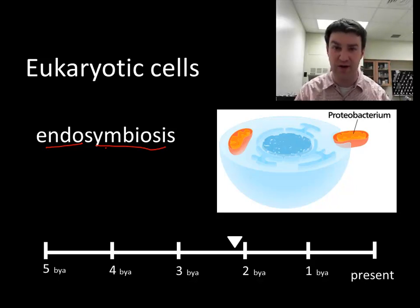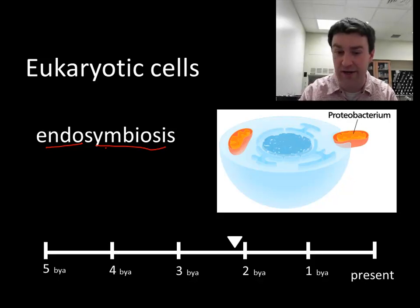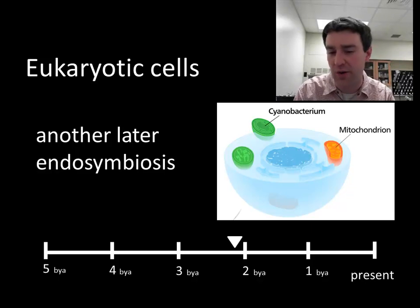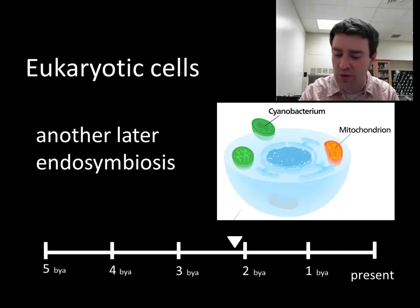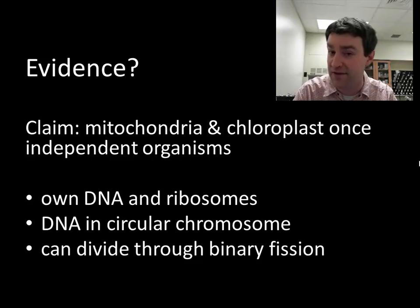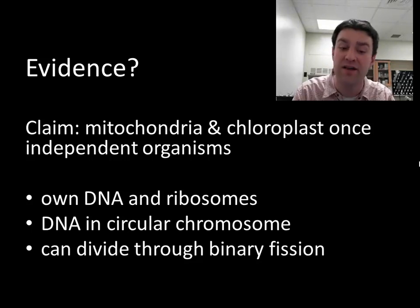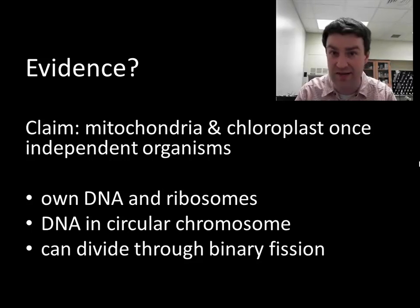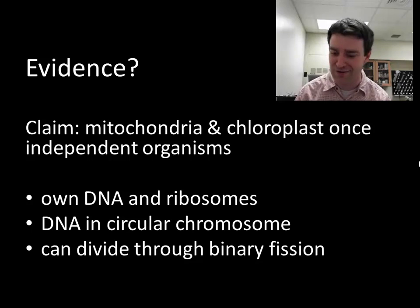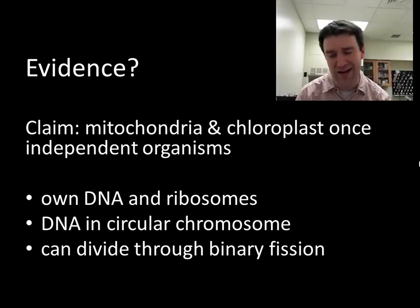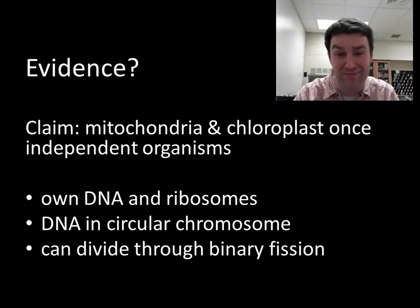We think this endosymbiosis may have occurred multiple times, because all eukaryotes now have mitochondria. And future autotrophic eukaryotes may have also acquired photosynthetic bacteria through another internal symbiosis. Why do we think this for mitochondria and chloroplasts specifically? Because they have their own DNA and ribosomes inside. Their DNA is shaped like a circular chromosome, just like bacteria, and they divide by a binary fission-like process, just like bacteria. So they really are just like little bacteria inside of us — bacteria are also on your skin serving as immune defense and lining your digestive tract helping you digest food.